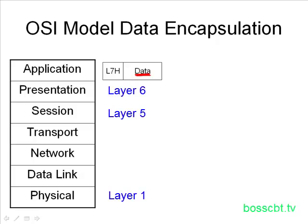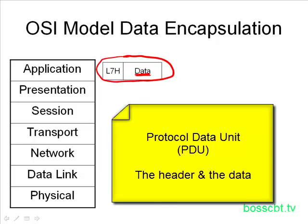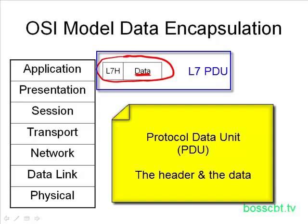That's why it's important to memorize the order of the layers. The application layer will prepend this header, and this overall package — the original data and the header prepended to it — is referred to as a protocol data unit, or PDU. The PDU represents both of these pieces: the data and the header. We could refer to this as the layer 7 PDU because it represents everything being created at the application layer, layer 7.